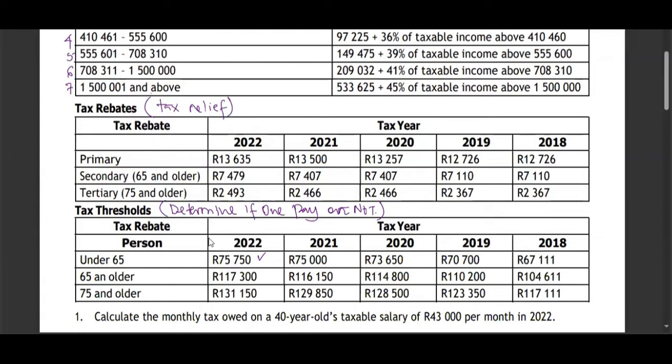If primary rebate, it's subtracted for everyone. Then if the person is 65 years and above, we shall subtract two rebates. Then if the person is 75 years and above, we shall subtract all three. We shall subtract these values according to the year that you are looking at.